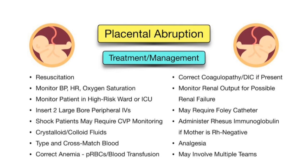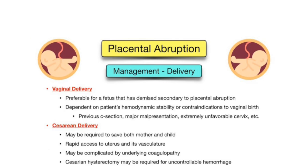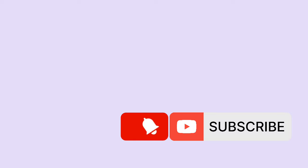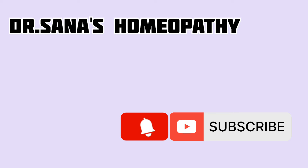Treatment of placental abruption often requires emergency management. Continuous monitoring of maternal and fetal status is essential. IV fluids and supplemental oxygen can be given. If there is fetal distress, an emergency caesarean section is performed, though this carries risk due to associated coagulopathy such as DIC.